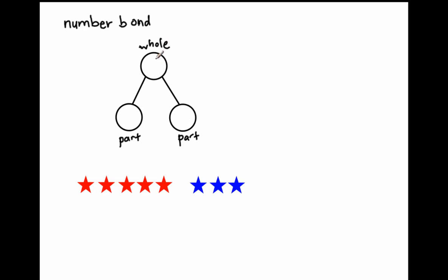So the first part that I have, one of the parts that makes up this number is, let's count, one, two, three, four, five. So I have five here, five stars. And let's say that the other part is three, three blue stars.